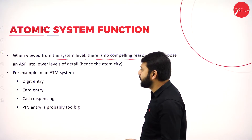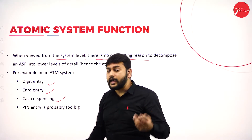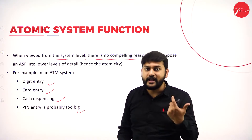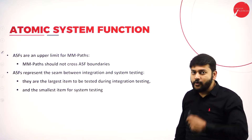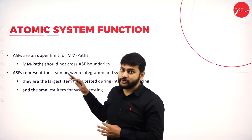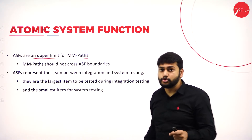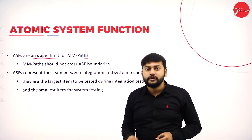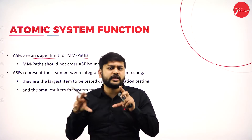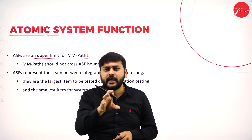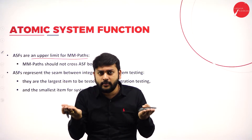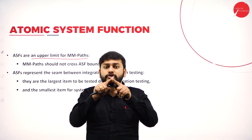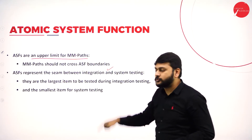Some examples include digit entry, card entry, card dispersing, and pin entry — though pin entry is probably too big. This is the different examples given with respect to ASF. ASF are the upper limit for MM paths — MM paths should not cross the ASF boundary. Imagine I have one unit — that is what I will call ASF when I see it at the system level. One particular behavior is what I call ASF, and I should be within that boundary. I should not cross that limit or boundary.